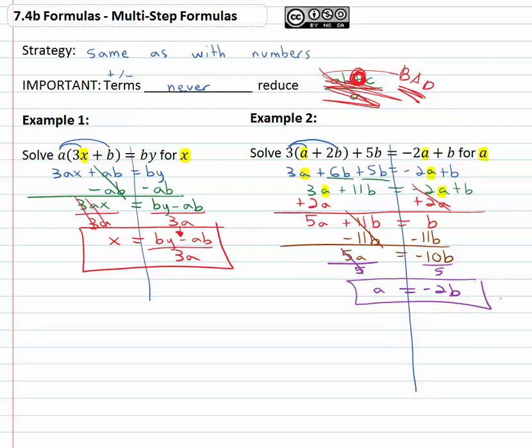Again the strategy for solving formulas is exactly the same as the strategy with numbers. First, we simplify the left and right side, then we get the variables on one side, then we solve the two-step equation, add and subtract, multiply and divide.